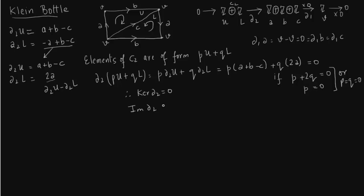So what is image of delta 2? Now image of delta 2 is generated as you can see by delta 2 U and delta 2 L. So it is generated by A plus B minus C and 2A.